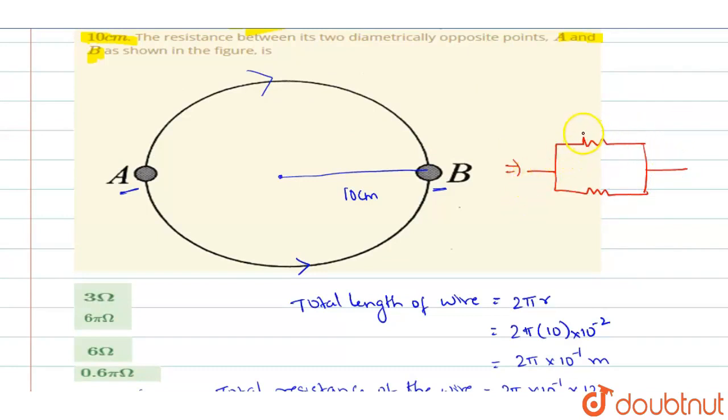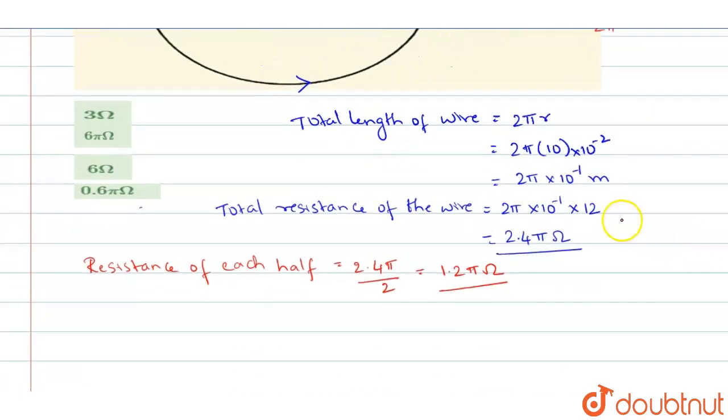And here this will be having 1.2π ohms. This will be 1.2π ohms. So between A and B you have to find. So when they are connected in parallel, R equivalent will be equal to 1.2π divided by 2 which gives you 0.6π ohms. So the equivalent resistance will be equal to 0.6π ohms which you have it in the fourth option.